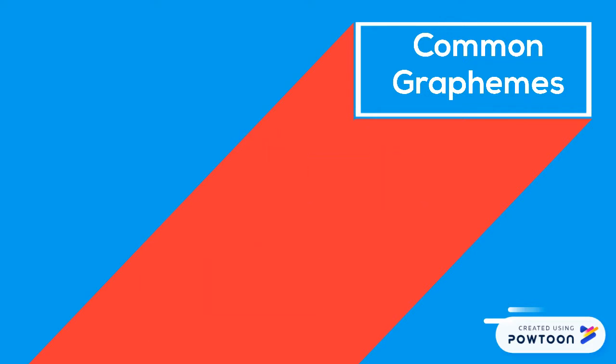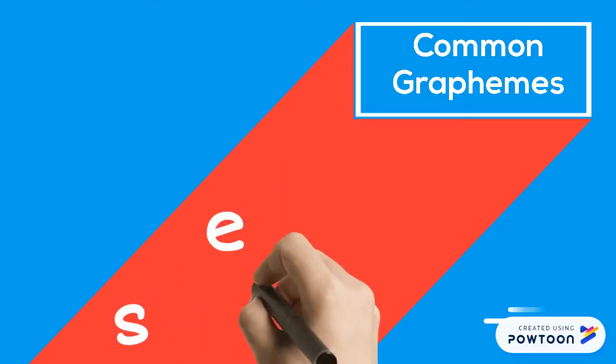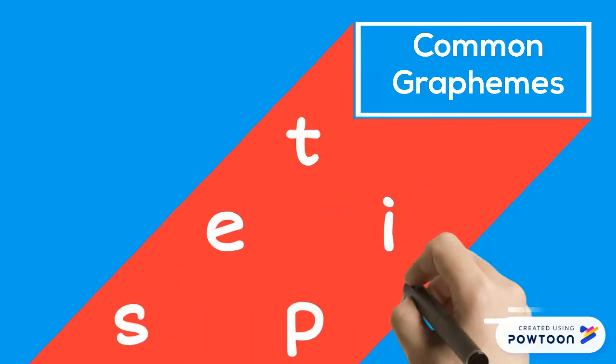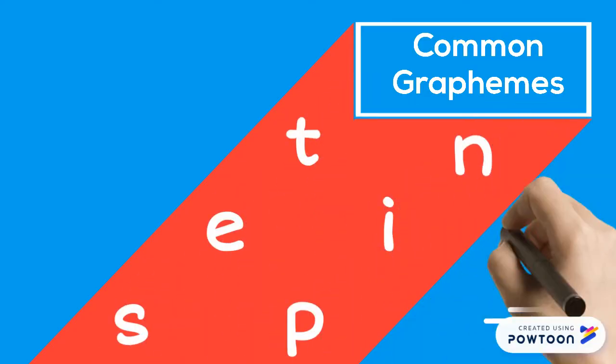A few of the most common phoneme-grapheme pairs in English are s, e, t, p, i and n.